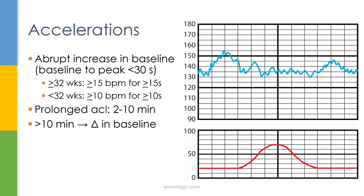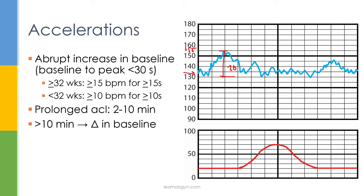An acceleration is an abrupt increase from baseline — abrupt means less than 30 seconds. For fetuses at or above 32 weeks, an acceleration must rise at least 15 beats above baseline and last at least 15 seconds (the 15×15 rule). For example, if the baseline is 135 and the tracing rises to 155 for 20 seconds, that counts as an acceleration. If it only rises 10 beats, it does not qualify.